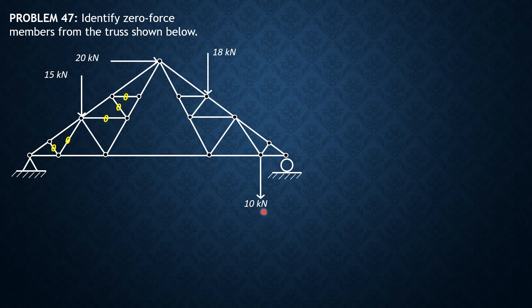Then we proceed to this joint here. The two members are collinear — this is unique — so this carries no force. Next, we look at a joint with three members plus a force, so it does not qualify for Case 2.